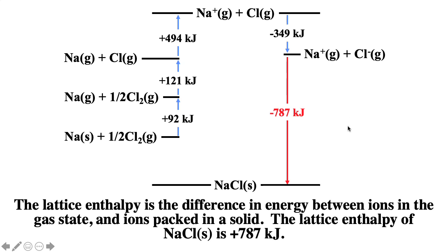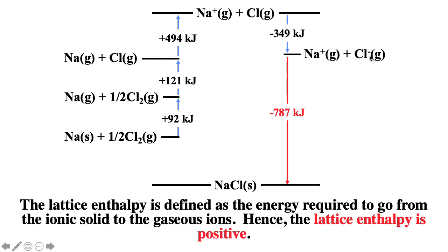Going from sodium chloride solid to sodium ions and chloride ions in the gas phase is the lattice enthalpy, which is always positive. The sodium chloride solid is much more stable than the gaseous ions because of the ion-ion interaction. This is an example of Hess's law — we add up these steps to get a net reaction, and we can see that ionic solids form because of the strength of the ion-ion interaction, with the ionization energy costing the most energy.